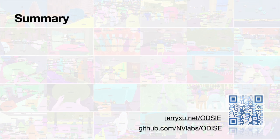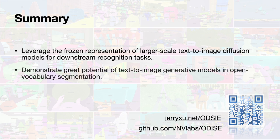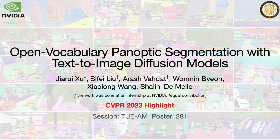To summarize: firstly, Odyssey takes the first step towards leveraging the frozen representation of larger-scale text-to-image diffusion models for downstream visual recognition tasks. Secondly, Odyssey demonstrates the great potential of text-to-image generative models at Open Vocabulary segmentation tasks. Our code is available publicly. Thank you for watching. Please visit us at poster number 281 in the Tuesday morning session to learn more.